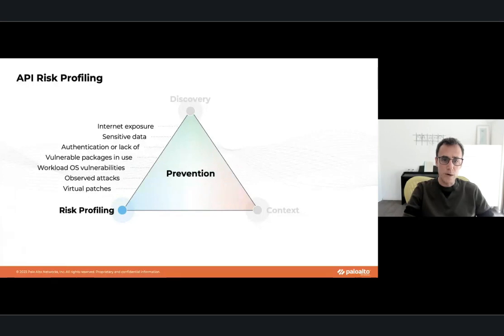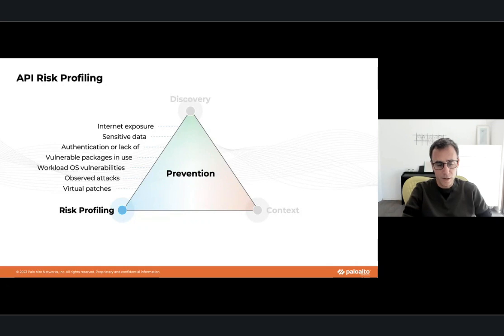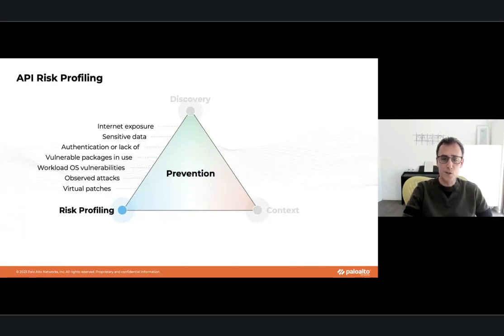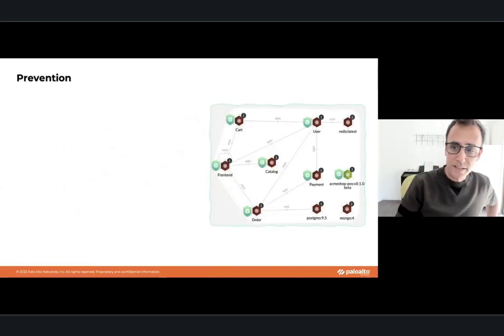The third pillar is risk profiling. This includes: whether the API is internet-exposed, whether it passes sensitive data or PII, whether it's authenticated, whether the API code uses vulnerable packages, whether there are OS vulnerabilities in the underlying workload, whether we've seen attacks on this API before, and whether we've applied virtual patches. These are the pillars of API security risk management.